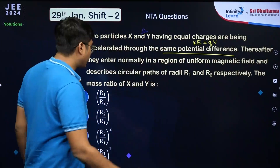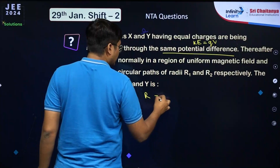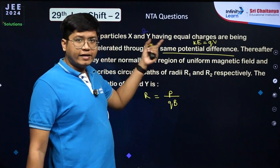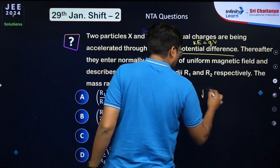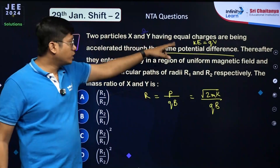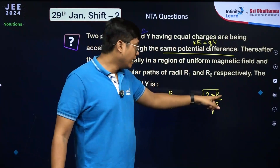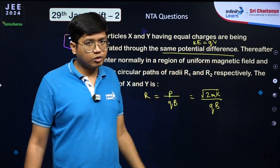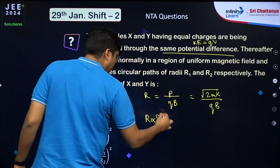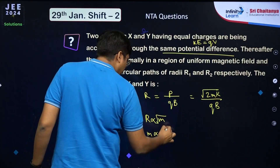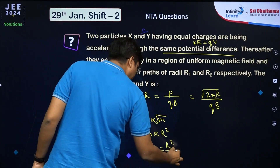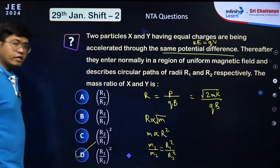The radius in a magnetic field is r = mv/qB = √(2mK)/(qB). Since charge, magnetic field, and kinetic energy are all the same for both particles, r is proportional to √m. Therefore mass is proportional to r², and m1/m2 = r1²/r2². The answer is option D.